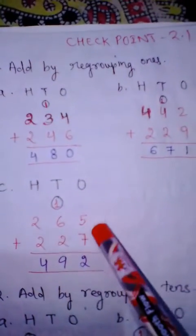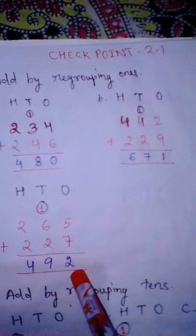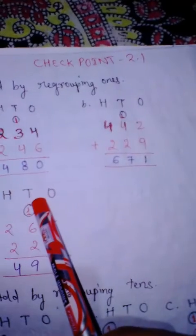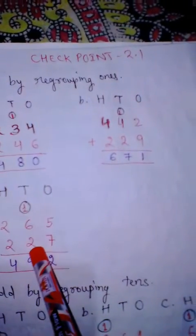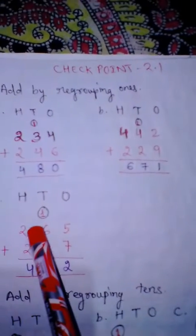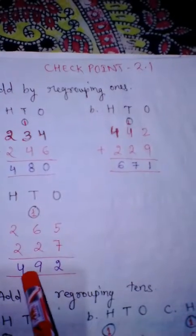Now see part C. 5 plus 7 is 12. So we regroup 12 and write 2 in the ones place and carry 1 in the tens place. So 6 plus 2 is 8, and carry 1 makes 9. We write 9 in the tens place. Now in the hundreds place, 2 plus 2 is 4. So our answer is 492.